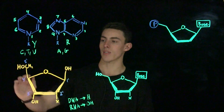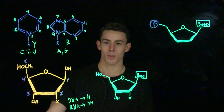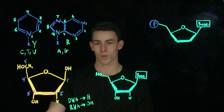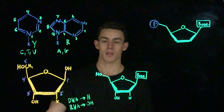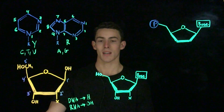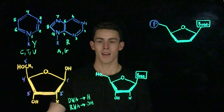Finally, there's the five-prime carbon. The five-prime carbon is important because this carbon is phosphorylated in many molecules important to biological systems, including the monomers that make up DNA and RNA.